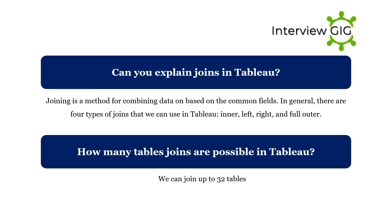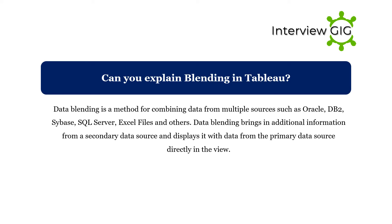Can you explain joins in Tableau? Joining is a method for combining data based on common fields. In general, there are four types of joins that we can use in Tableau: left, right, inner, and full outer. How many table joins are possible in Tableau? We can join up to 32 tables.